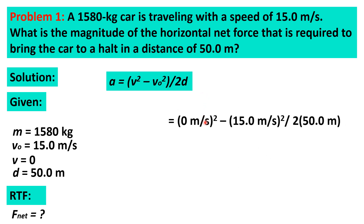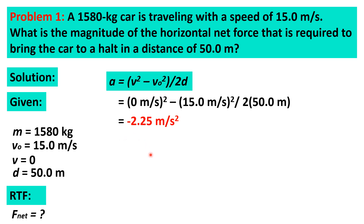Before we can find the net force acting on the car, we first determine the acceleration using the formula: acceleration A equals (V² minus V₀²) divided by 2d. Substituting the given values — final velocity is zero, initial speed is 15.0 m/s, distance is 50.0 meters — we get an acceleration of negative 2.25 meters per second squared. The negative sign is expected because the car has to decelerate.